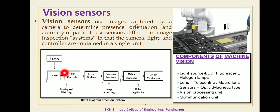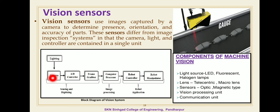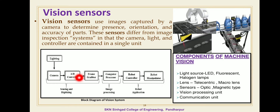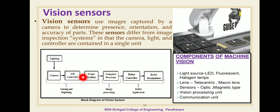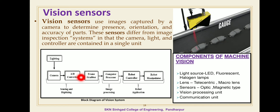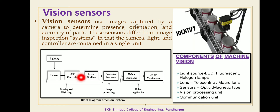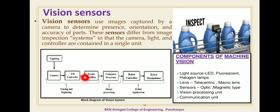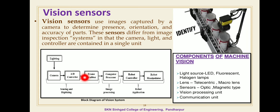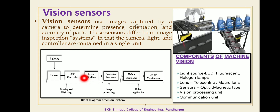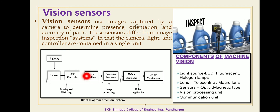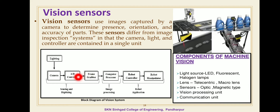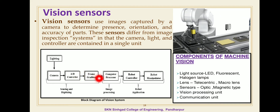The AD converter is required to convert the analog picture signal form to the digital picture form, which is suitable for computer processing. The analog voltage signals from the camera are sampled periodically. The AD converter is a part of either the digital camera or is placed in front of the frame grabber.